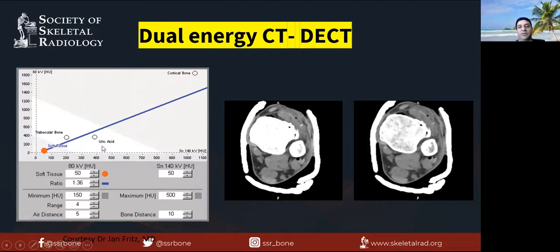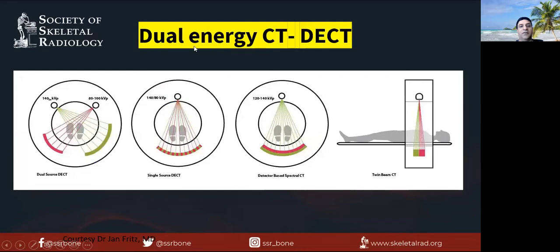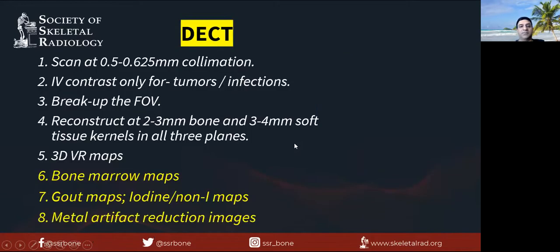For example, we have soft tissue windows from two different energies — 80 and 140 — and you can see calcium appears better at 80. There are different ways of acquiring dual energy CT depending on your vendor: two sources, a single source with rapid kVp switching, a detector-based system where the detector separates the two beams, or a twin-beam CT with two beams from a single source. Because of dual energy CT, we can see additional things beyond single energy CT — bone marrow maps, iodine maps for arthrograms or perfusion scans, non-iodine maps for 3D reconstructions, and metal artifact reduction.